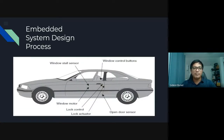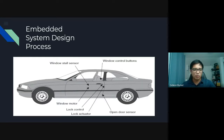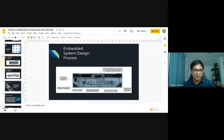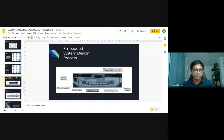Another example for our embedded system: your car door is an example of an embedded system. This is an electronic ping pong example as well. Each demonstrates how an embedded system has a very specific function.